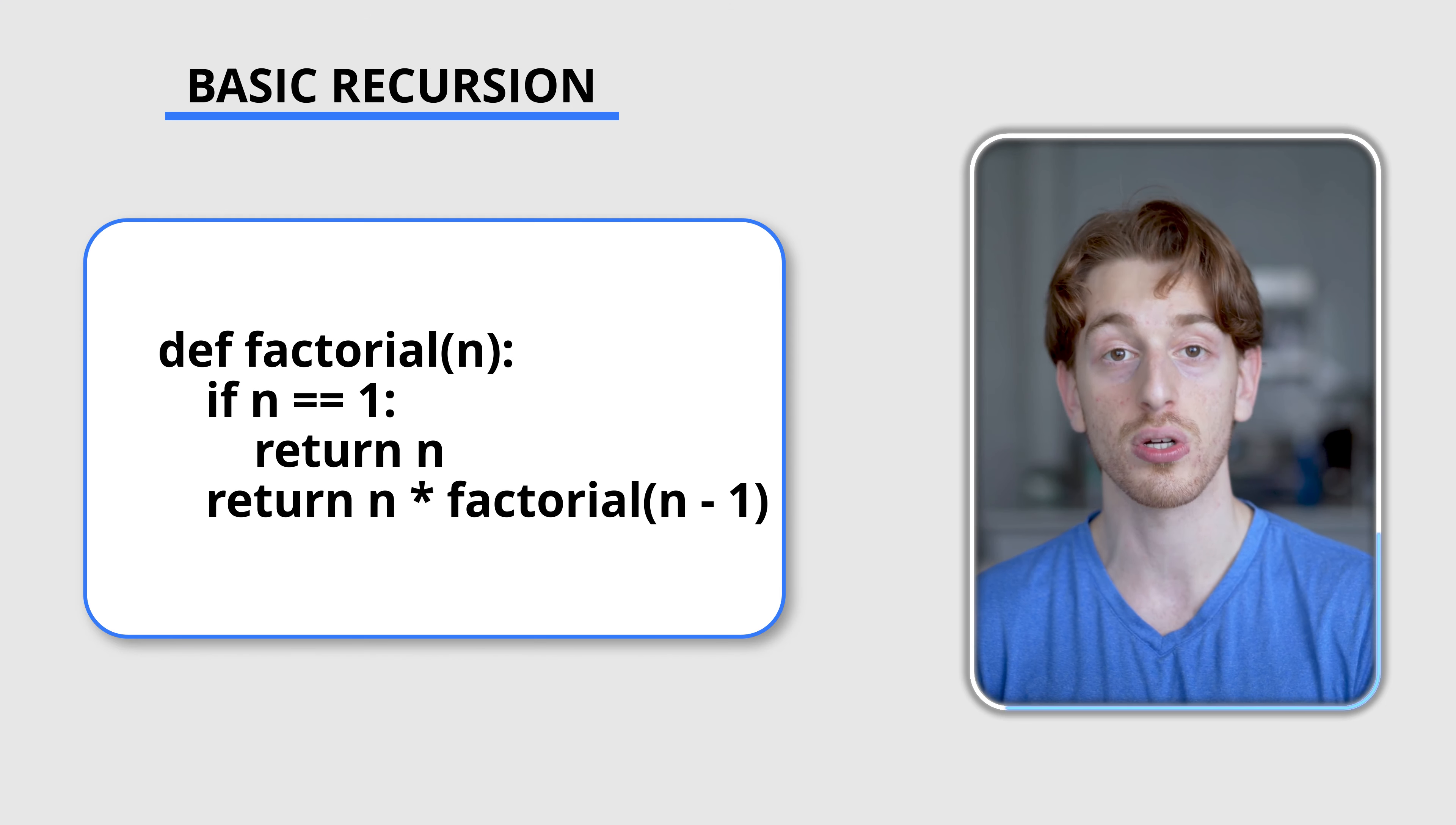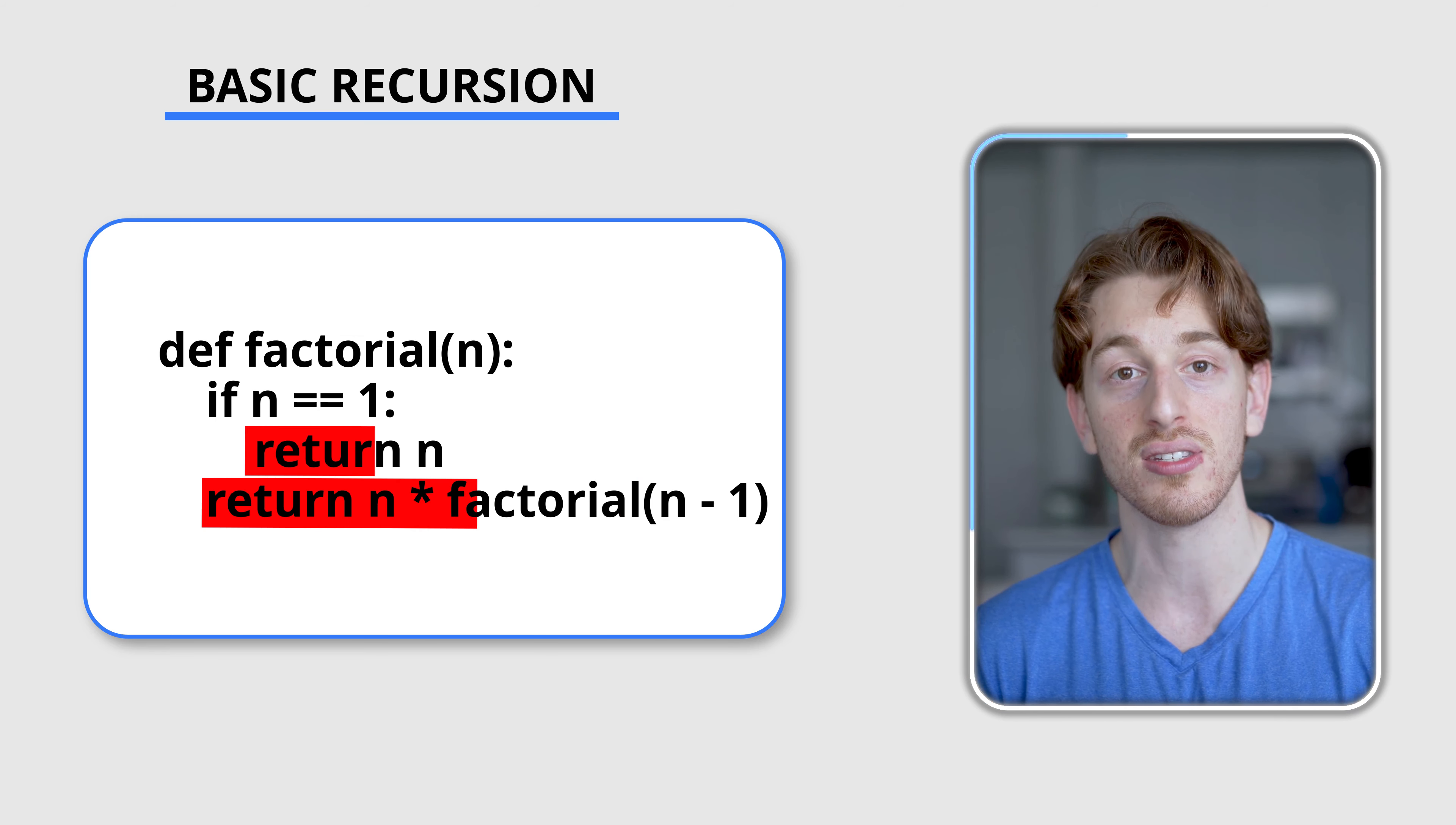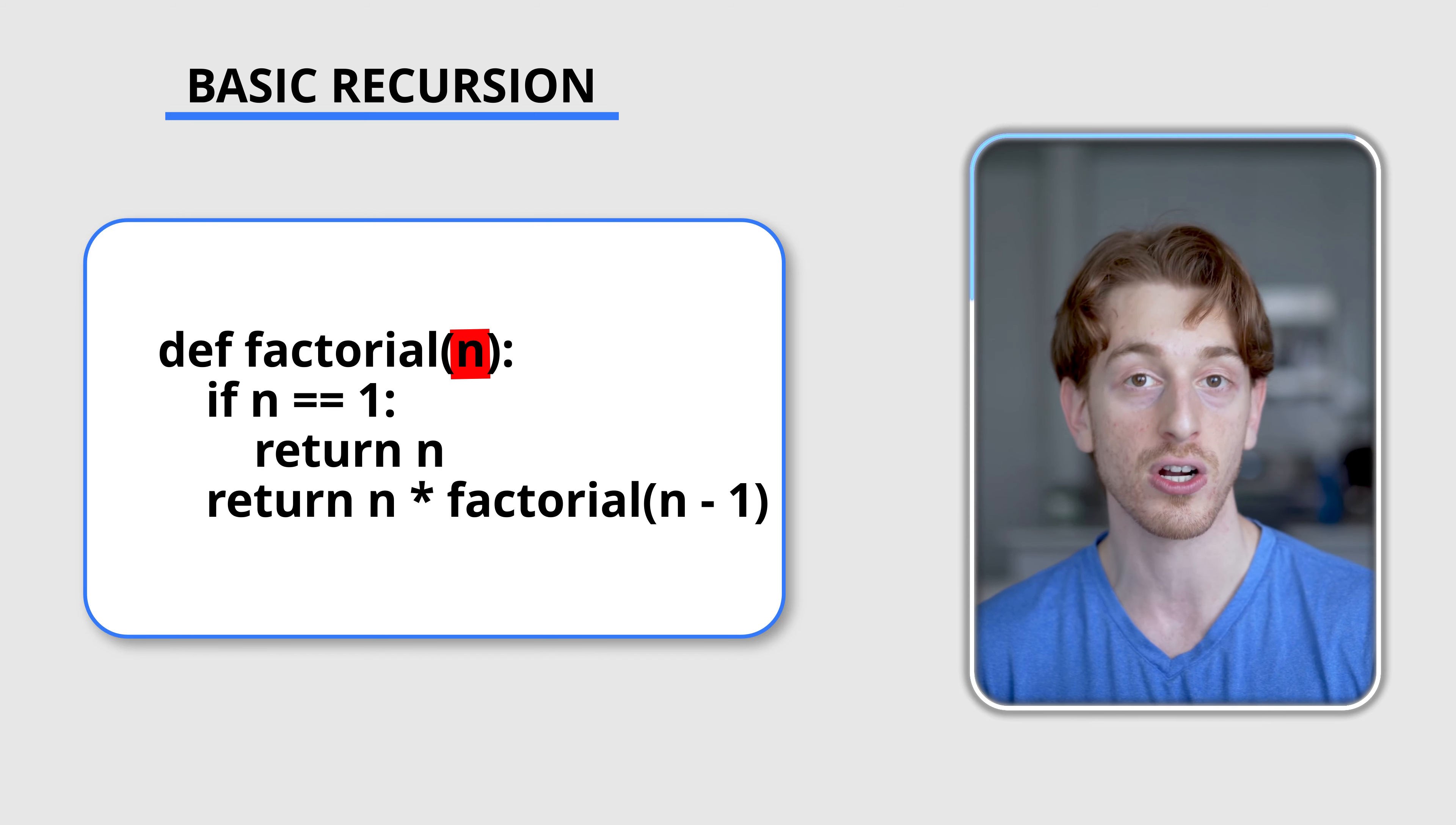Here we are calculating the factorial of a number. This example is simple, but any recursion boils down to the decision we make to explore new states, reduce the decision space, and what we compute as the value for the current state. The state is represented by the values of the parameters of the recursive function, so in this case it's only the value of n.